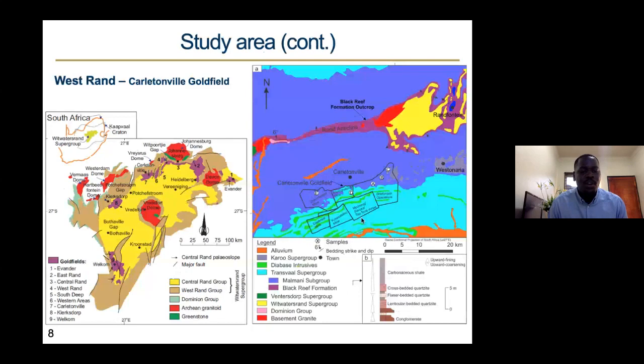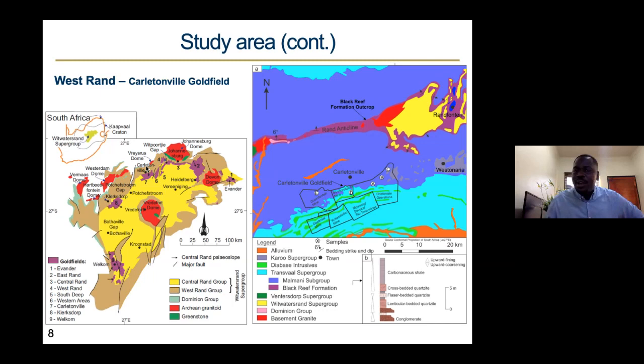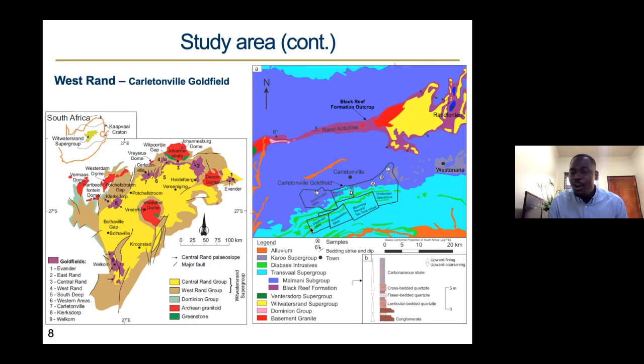For those not fully initiated in the Wits, we have a number of gold fields — I will speak of nine major ones. Carltonville is about 80 to 85 kilometres from Johannesburg. On the right-hand side is a map compiled some time ago with additional information added. This shows some of the mines found in the Carltonville Gold Field; some are still operational, some shafts are closed. I also had to rely on surface boreholes that were drilled before these shafts were sunk, and there is also an outcrop of the Black Reef to the north.